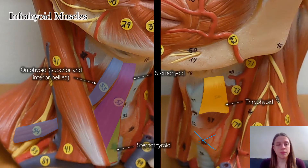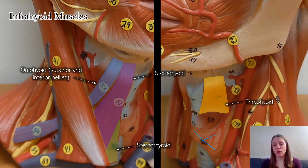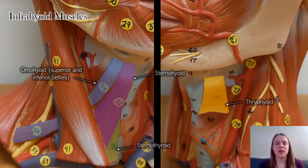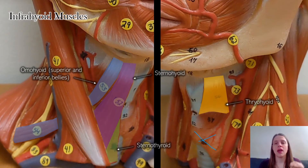All of the infrahyoid muscles depress the hyoid bone, so they are all synergists to each other. But they are antagonists to the suprahyoid muscles, which elevate the hyoid.